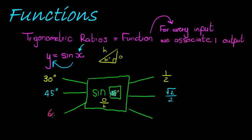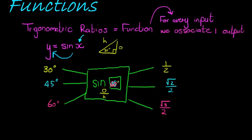You'll actually notice later on that these are what we call special angles. Looking at another input: 60 degrees comes in, and sine asks the same question — what's the ratio of your opposite over hypotenuse? 60 answers that the ratio is the square root of 3 over 2. Again, not a pretty answer, but this is also a special angle. This is what we call functions — when we have an input and only one output.